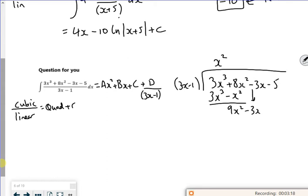How many times does 3x go into 9x squared? It's 3x times. 3x times the 3x minus 1 is 9x squared minus 3x. And that actually gives me 0 because it all cancels. Bring down the minus 5.